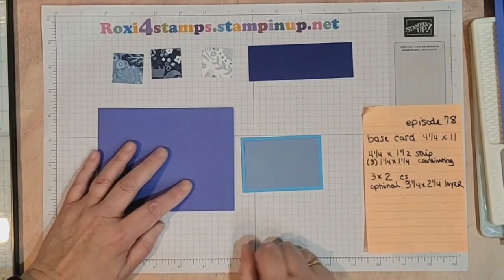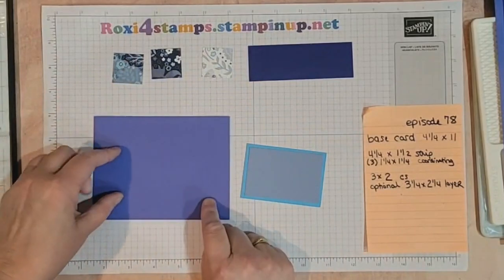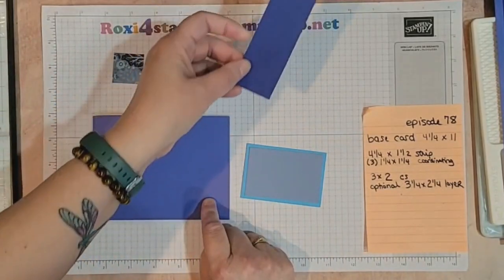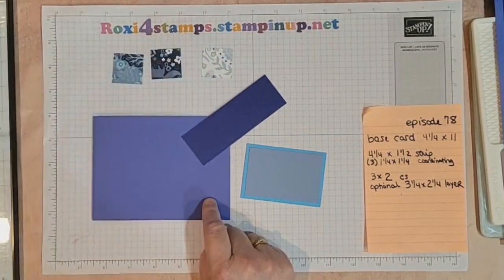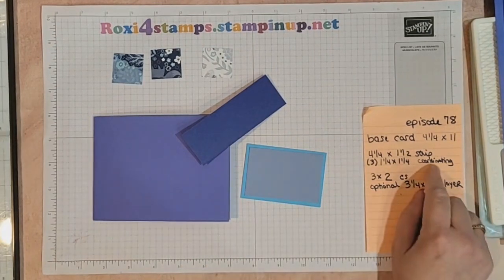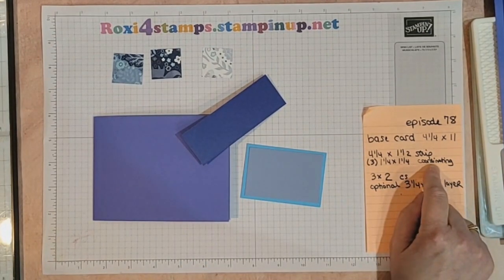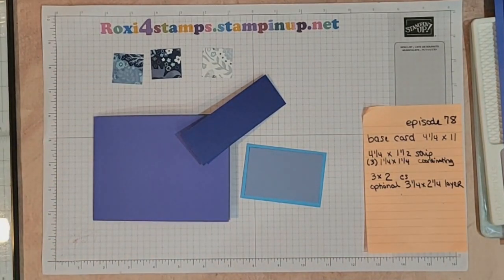All right so here we go. So we have our base card four and a fourth by eleven. We have our strip that is four and a fourth by one and a half. And we have our three one and a fourth by one and a fourth pieces of either coordinating DSP or coordinating colored cardstock. That's it guys. Thanks for tuning in. We'll see you on Friday and we'll go ahead and finish this up. Bye for now.